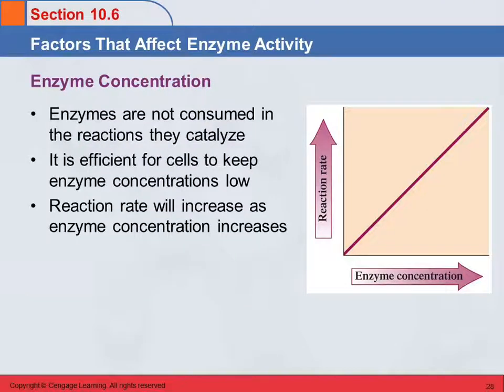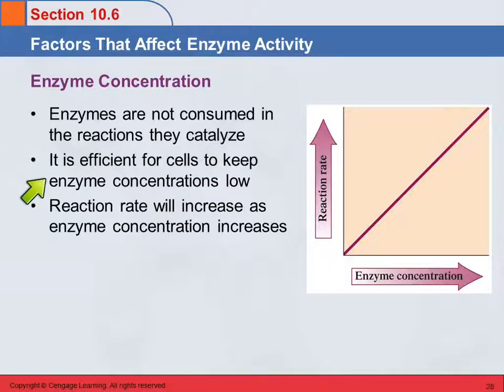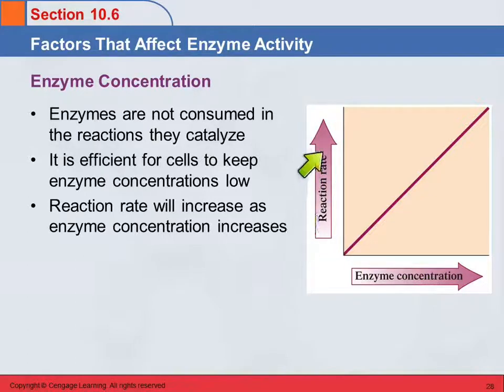Enzyme concentration is also going to affect the rate. The enzyme is not consumed in the reaction, so it's efficient for cells to keep enzyme concentrations low — the cell expends energy making these enzymes and won't make super high concentrations of them. But if you go into an in vitro situation and increase the enzyme concentration, you find that adding more enzyme causes the rate of reaction to go up.